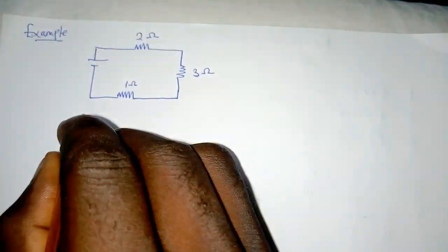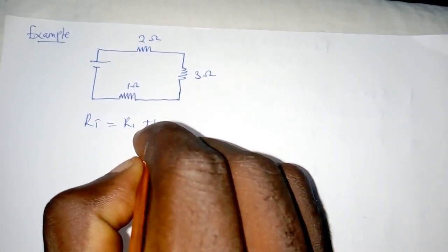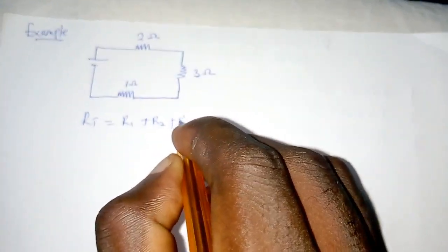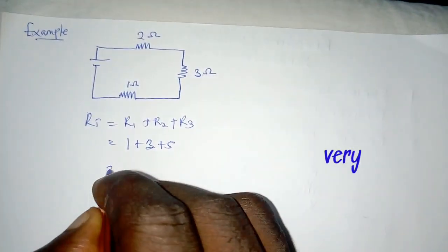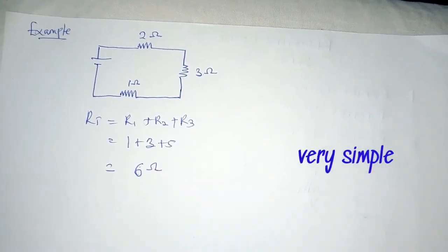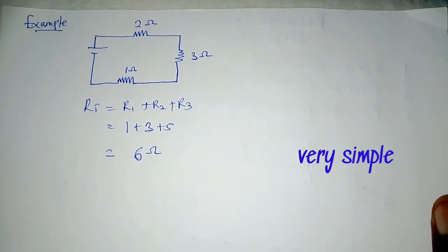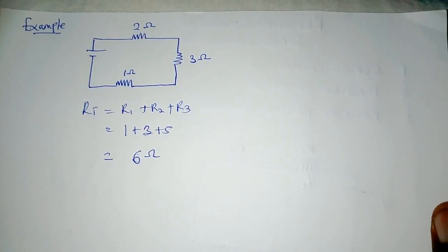So what we do is merely add the resistors together. So we have 1 plus 3 plus 5, you will get an answer of 6 ohms. So that would be all for now. Subscribe to stay connected. Thank you.